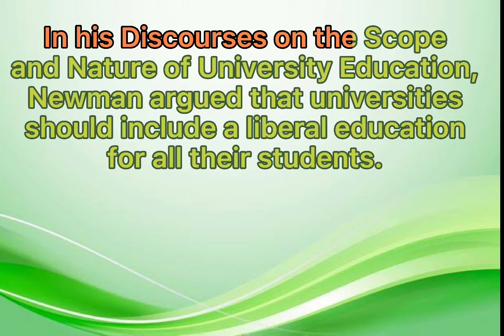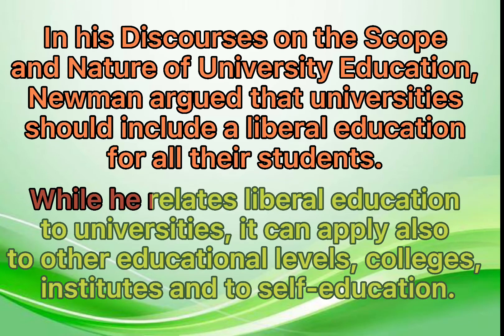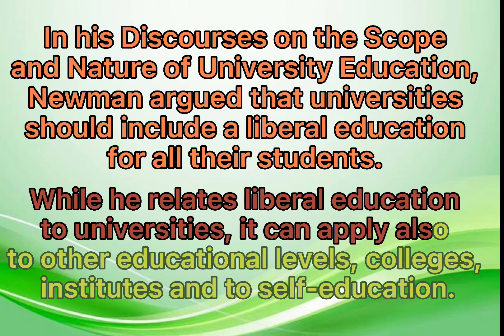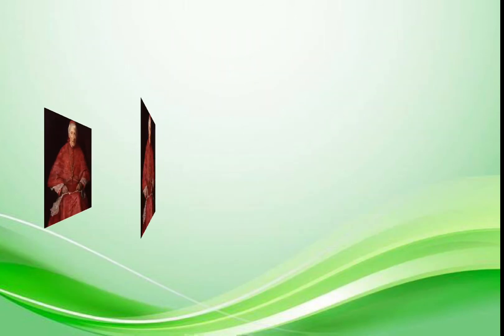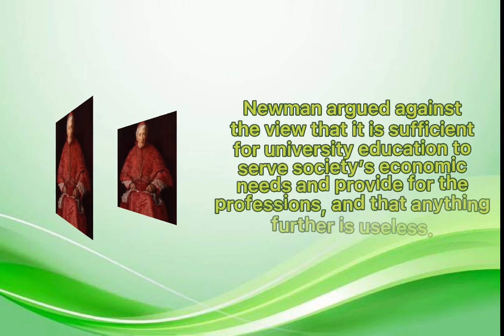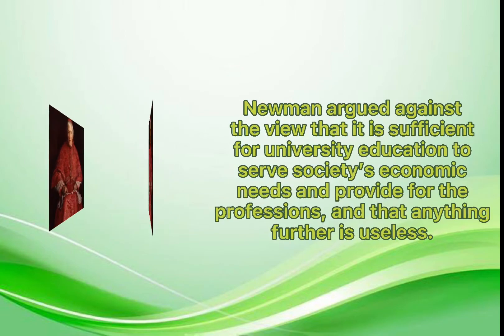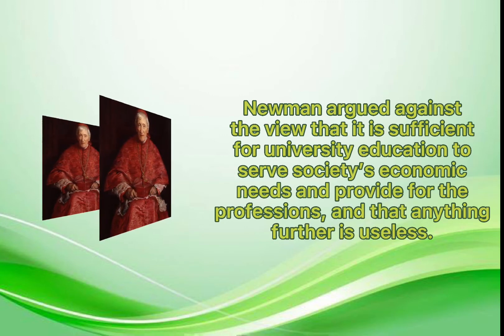In his discourses on the scope and nature of university education, Newman argued that universities should include a liberal education for all their students. While he relates liberal education to universities, it can apply also to other educational levels — colleges, institutes, and to self-education. Newman argued against the view that it is sufficient for university education to serve society's economic needs and provide for the professions, and that anything further is useless.